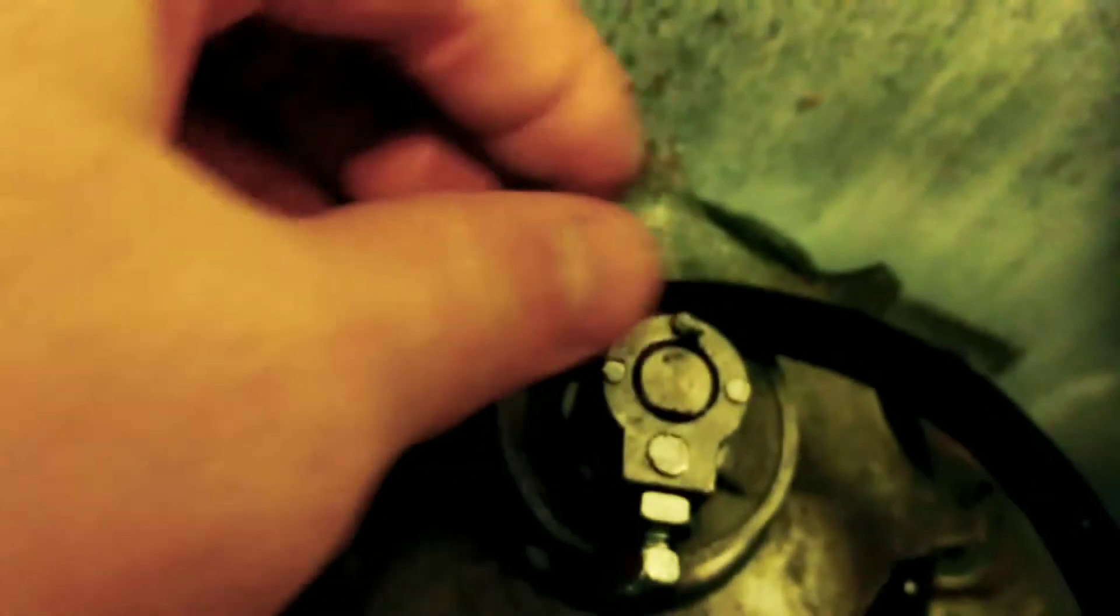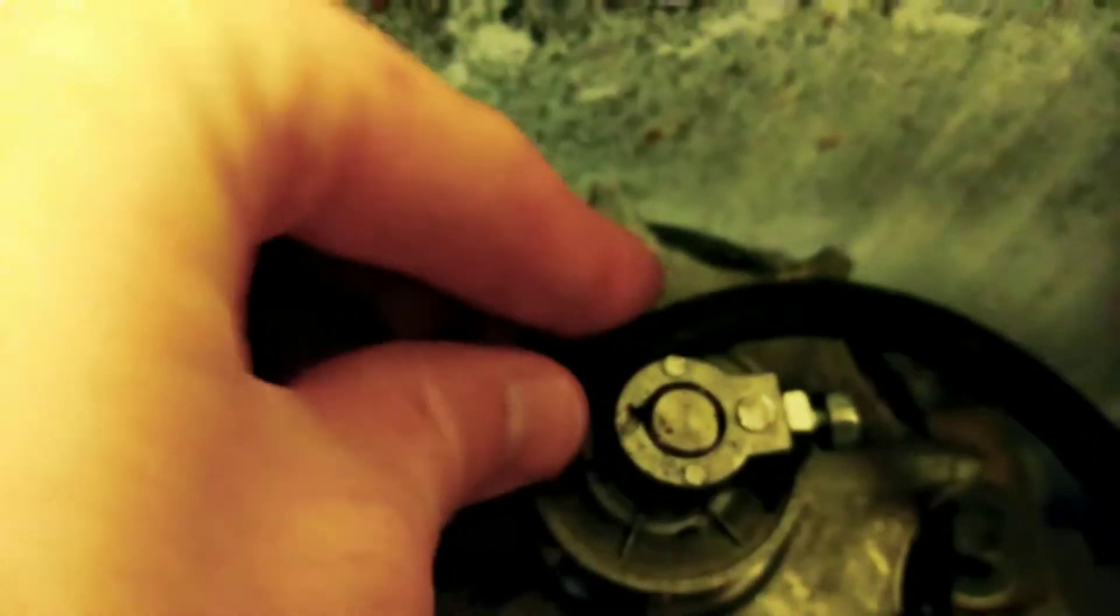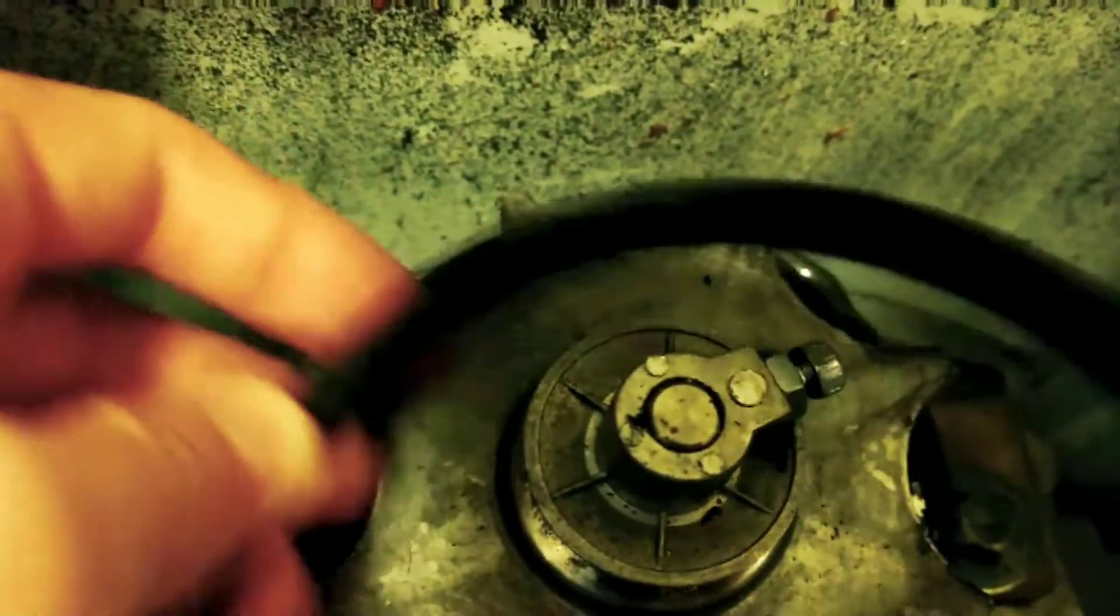Make sure when you're putting it on that you put it on the big side first and pull it up over here, and here we have a brand new belt for our Haier HLP 21N washing machine.